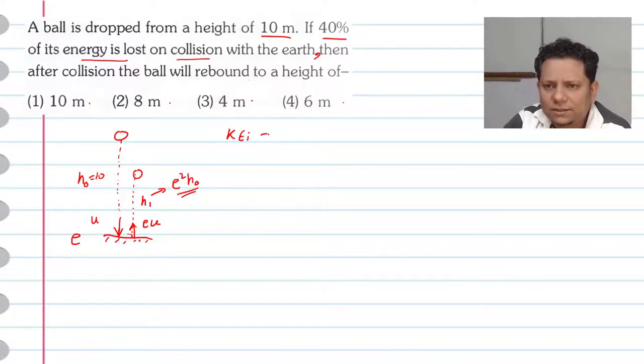Initial kinetic energy is half m u squared, where u is the velocity before hitting the ground. After collision, the velocity is eu, so final kinetic energy is half m e squared u squared.